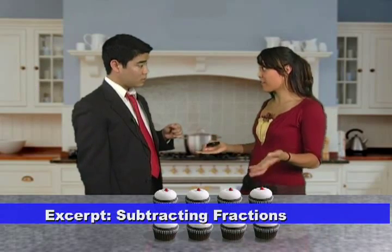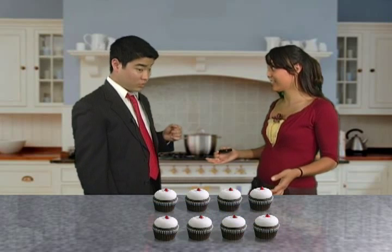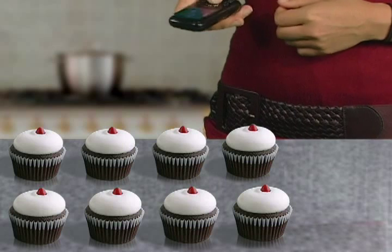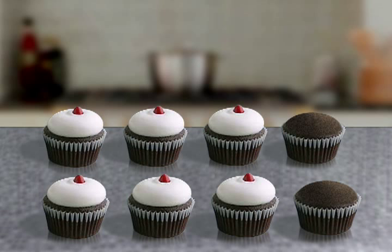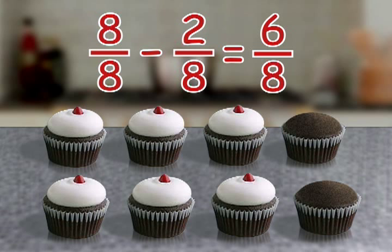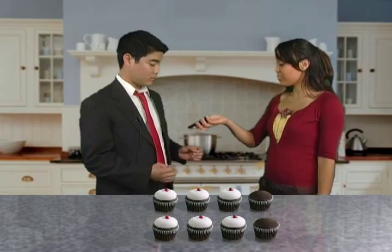Right now we have eight-eighths of the cupcakes with frosting on them. But we want two of the cupcakes to not have frosting on them. All I have to do is set this to subtract frosting. Eight-eighths of the cupcakes were frosted, but we subtracted frosting from two of the cupcakes. Eight-eighths minus two-eighths equals six-eighths. Six out of the eight cupcakes still have frosting. That's right — six-eighths.